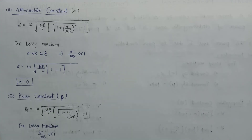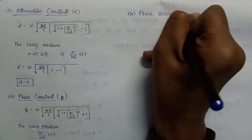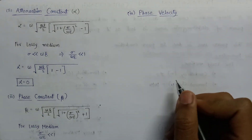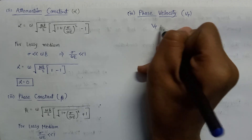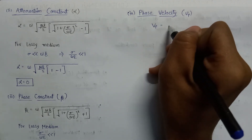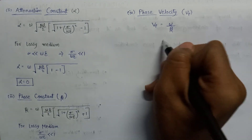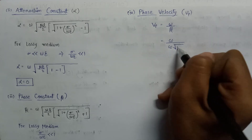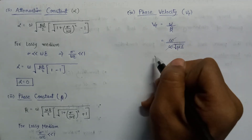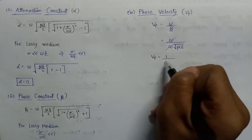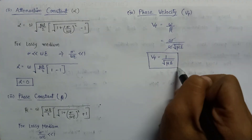Now let us look at the phase velocity, represented by vp. The expression for phase velocity is omega over beta. Since we found the value of phase constant to be omega times the square root of mu epsilon, omega in the numerator and denominator cancels, giving the final expression for phase velocity as vp equals 1 over the square root of mu epsilon.